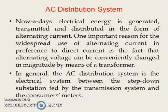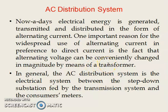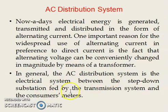Nowadays, electrical energy is generated, transmitted, and distributed in the form of alternating current AC. One important reason for the widespread use of AC over DC is that alternating voltage can be conveniently changed in magnitude by means of a transformer — it can raise or lower the voltage level. In general, the AC distribution system is the electrical system between the step-down substation fed by the transmission system and the consumer's meters, where service mains ends.